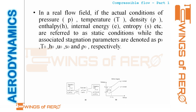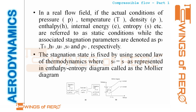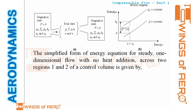The associated stagnation parameters are denoted as P₀, T₀, h₀, u₀, s₀, and rho₀ respectively. The stagnation state is fixed using the second law of thermodynamics, with the statement that s₀ equals s — meaning entropy remains constant. This can be represented on a Mollier diagram.